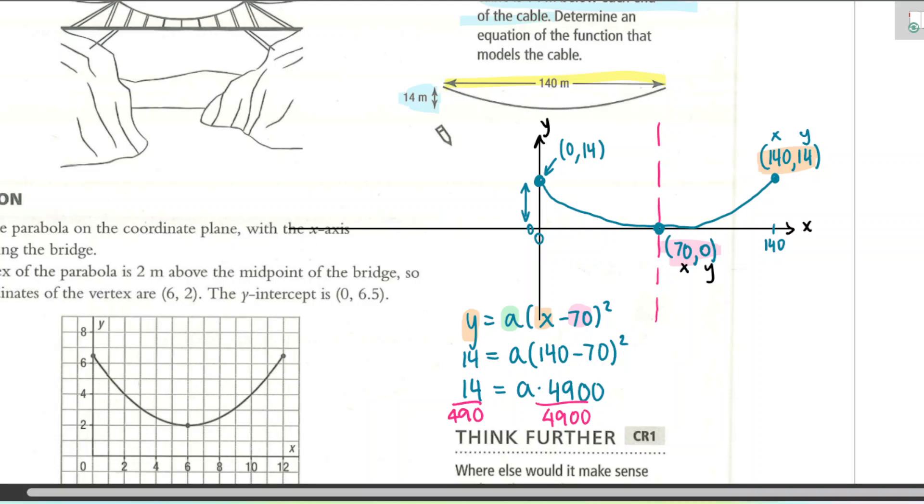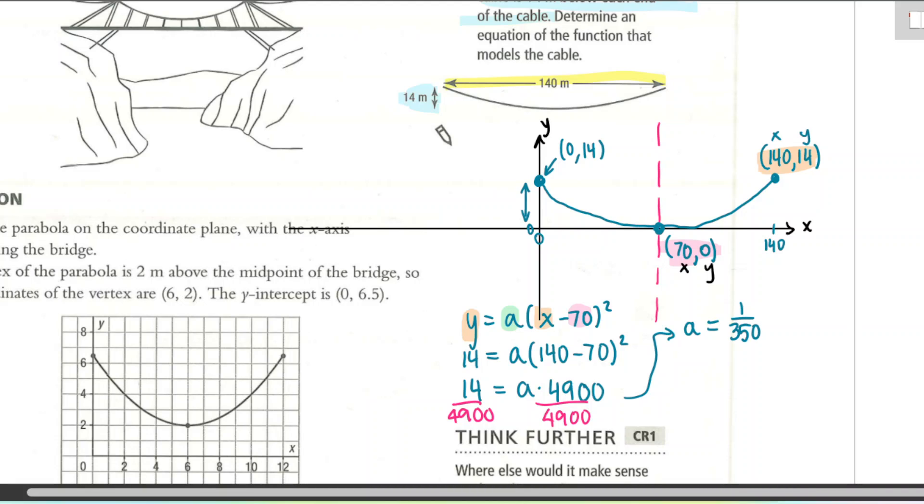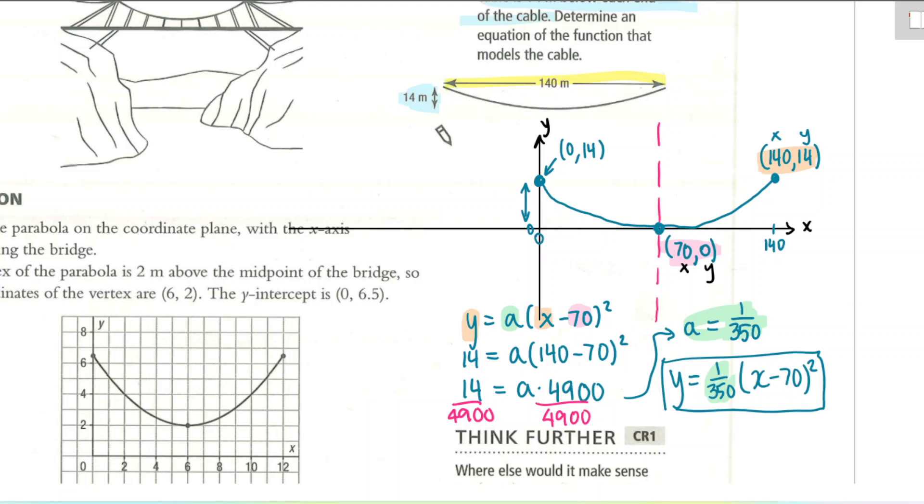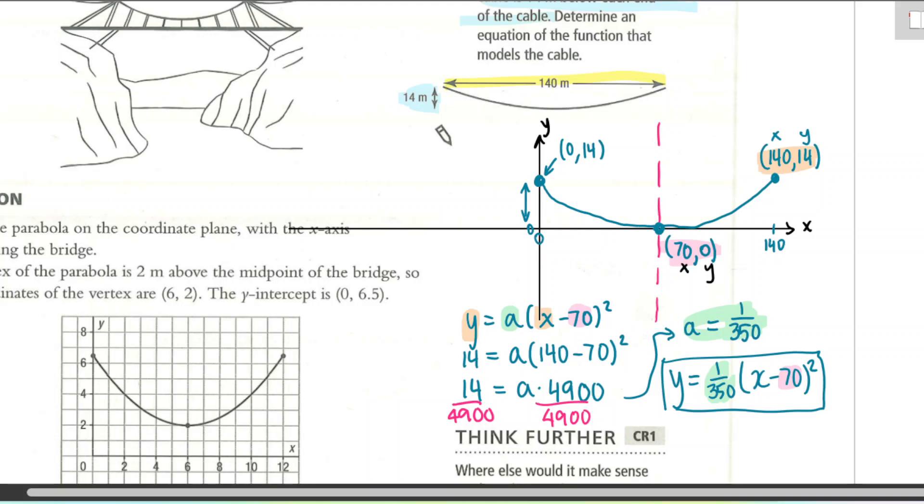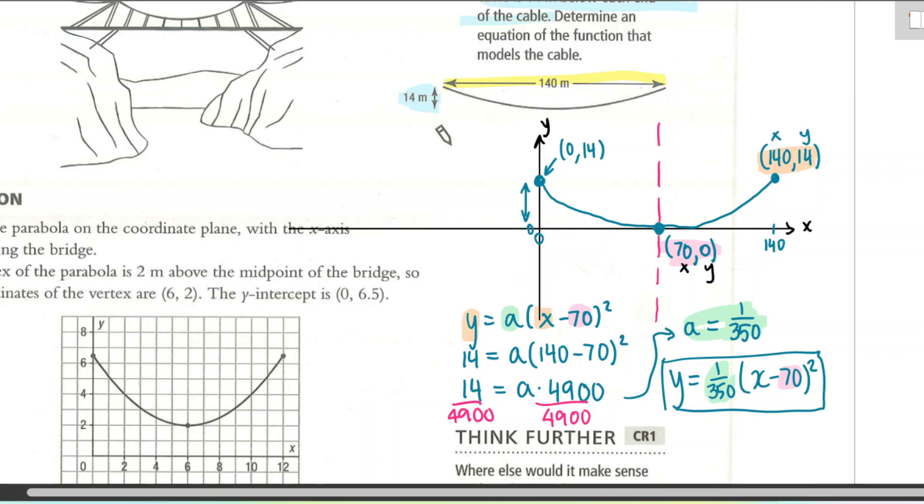Now you could write this final answer as a fraction, or you could write it as a decimal. It doesn't matter, but the decimal is a little bit awkward. It's like a longer repeating decimal. So I would recommend writing it as a fraction. If you reduce 14 over 4,900, I believe it's 1 over 350. Yeah, it is. So our final equation is y equals 1 over 350 times x minus 70 all squared. So that is an equation that models that bridge. We got the 1 over 350 from there. And we got the 70 from the vertex. And remember, we're adding 0 on there, but we didn't include that because it just makes it look simpler this way. That's the end of the lesson.